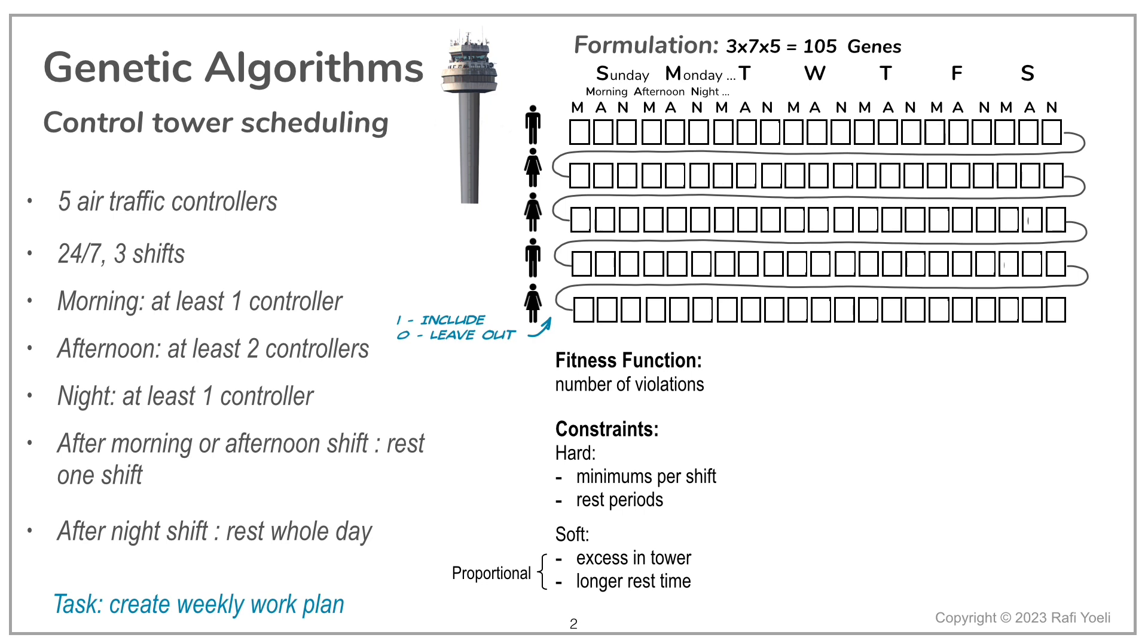Turning these ideas into action, we will define our fitness function as a cumulative sum of the penalties over 7 by 3 equals 21 shifts, with penalty of each shift being proportional to the number of unnecessary people in the tower. And a similar proportional penalty could be added for longer than minimum resting time, in case we want to add also that factor to our run.